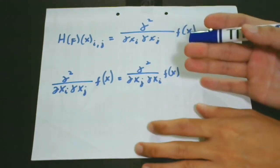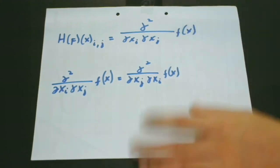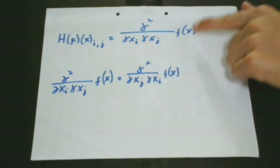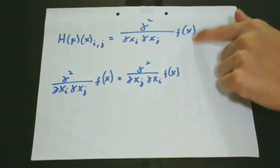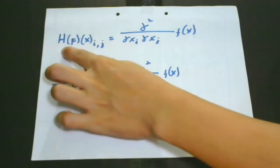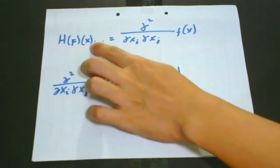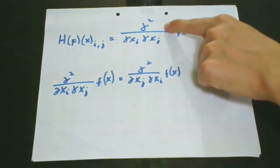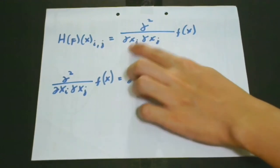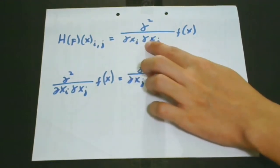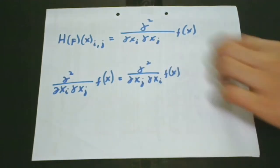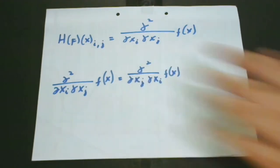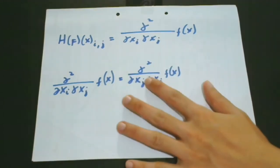In this case, we are using many second derivatives. These derivatives can be collected into a matrix called the Hessian matrix. The Hessian matrix is defined by the expression H of the function, where the variable i to j is equal to the second derivative with respect to the derivative of Xi times the derivative of Xj of Fx. At this point, you can already realize that the Hessian and Jacobian are intimately related.